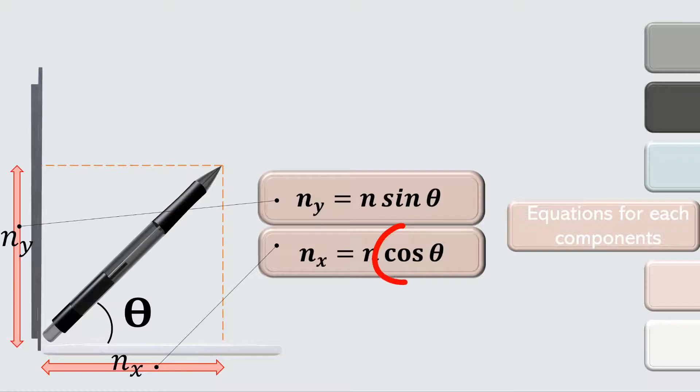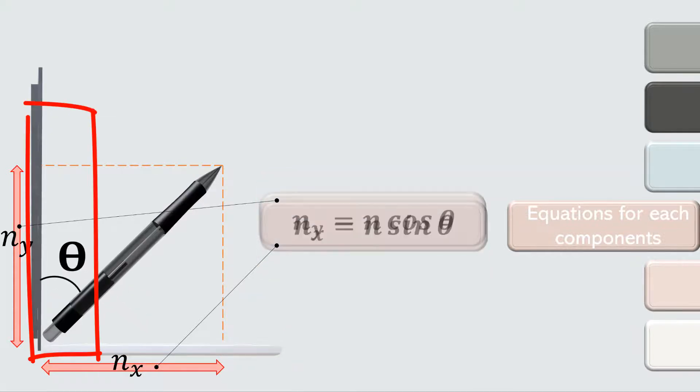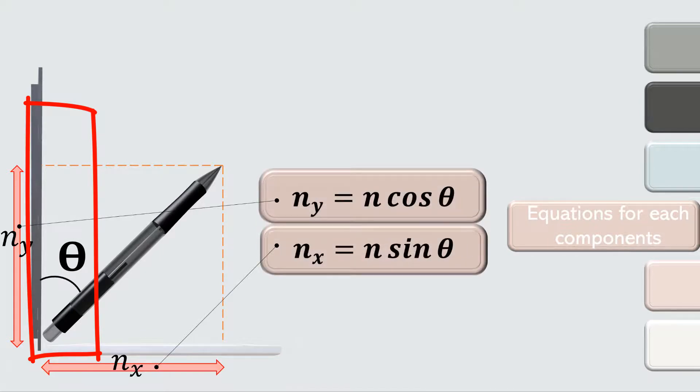Oh, but remember, the cos belongs to the component that the theta is attached to. And if the theta is attached to the y axis like this, then the y component of the vector will use the cos in its equation. Got it?